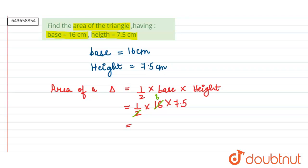16 divided by 2 is 8. Therefore, this becomes 60 cm square and this is the area of a triangle.